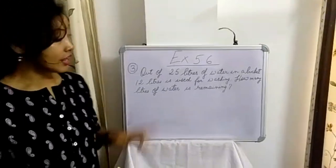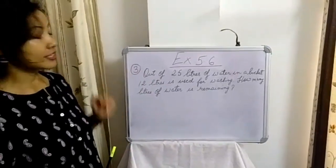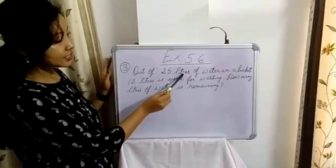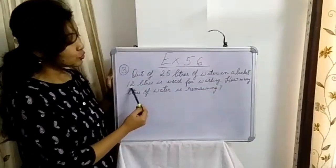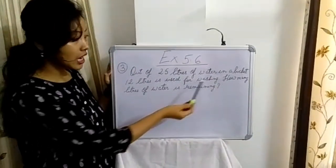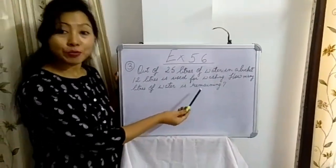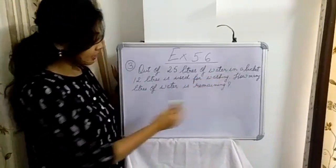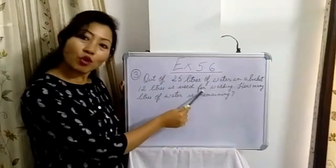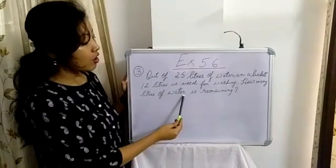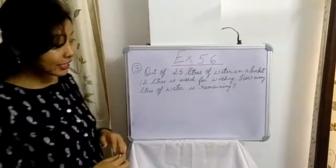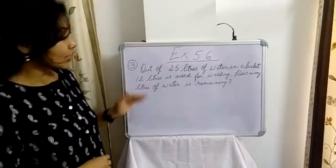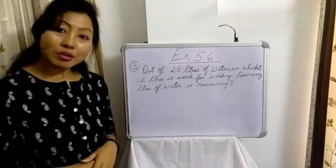So dear children, let us solve question number 3. Here it is given: out of 25 litres of water in our bucket, 12 litres is used for washing. How many litres of water is remaining? We have to subtract 12 litres from 25 litres to get the litres of water that is remaining.